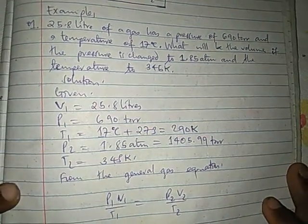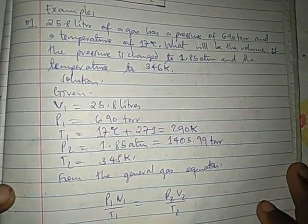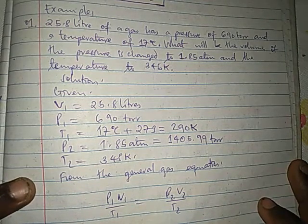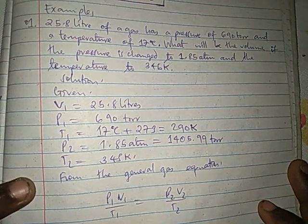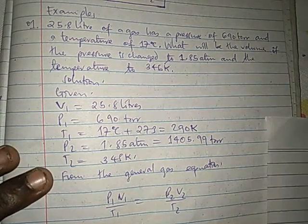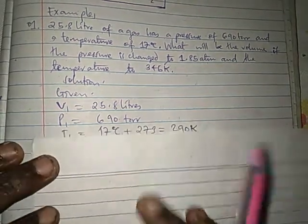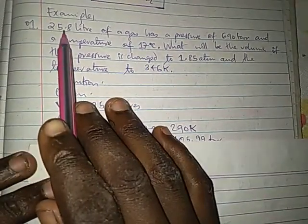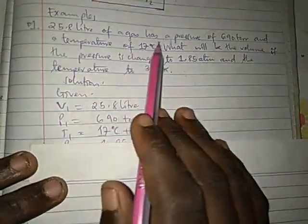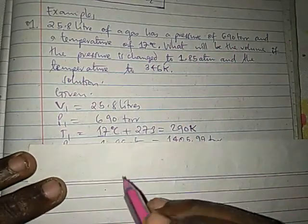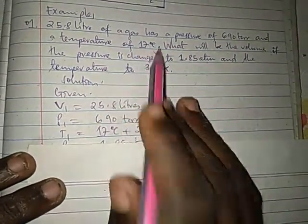Welcome back friends. In this video let's start with this worked example and then later we shall discuss about Avogadro's Law. In this example, according to our question, 25.9 liters of gas has a pressure of 30 torr and a temperature of 17 degrees centigrade.